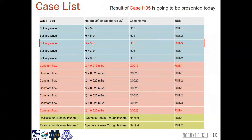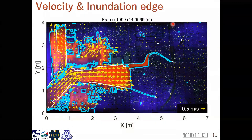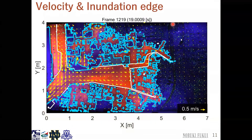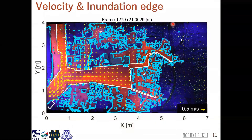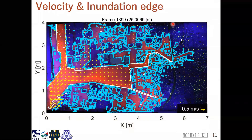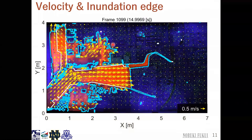Here is our case name list. We have three cases. In this presentation, I'm going to explain the solitary wave case with a wave height of 5 centimeters measured at wave gauge 1. This movie shows the inundation process of case H05. We can check the inundation extent and the velocity.